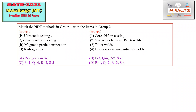Hello and welcome to our YouTube channel Metallurgical Facts. This is Part 6 of the matching type question practice for GATE 2021. Here, Group 1 contains some NDT methods and Group 2 contains some of the items detected by these NDT methods.